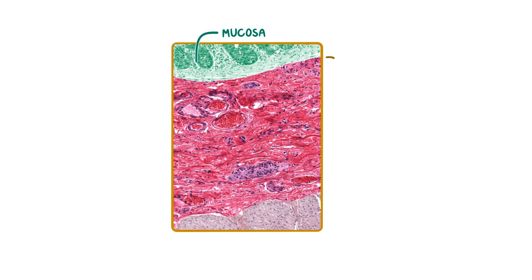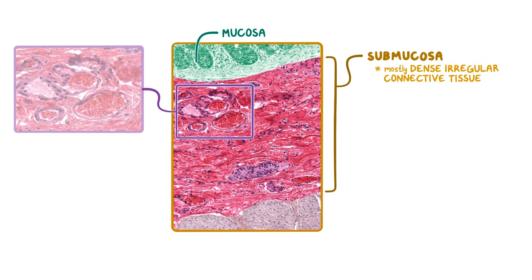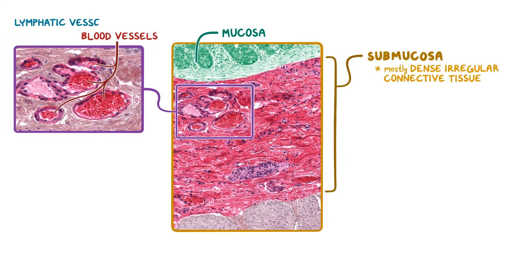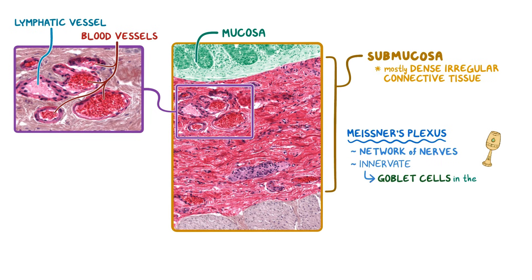Beneath the mucosa is the next major layer of the colon, the submucosa. This layer consists mostly of dense irregular connective tissue, but also contains blood vessels, lymphatic vessels, and the submucosal or Meissner's plexus. Meissner's plexus is a network of nerves that innervate the goblet cells in the mucosa as well as the smooth muscle of the muscularis mucosa. In this image, there's a relatively large cross section of a bundle of nerve cells that are part of Meissner's plexus, as well as a number of large blood vessels and a lymphatic vessel in the upper left of the image.